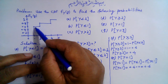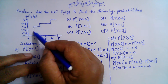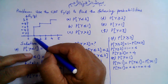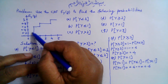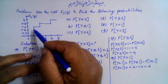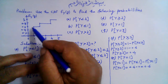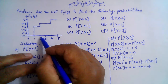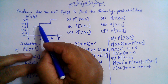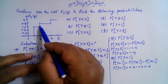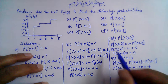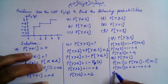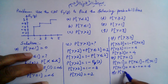Looking at it another way, the height of the jump at a point equals the probability at that point. The height of the jump at 1 is 0.6 − 0 = 0.6, so P[Y = 1] = 0.6. Likewise, P[Y = 2] is given by the height of the jump at 2, which is 0.8 − 0.6 = 0.2.